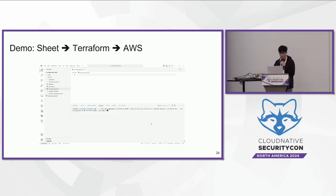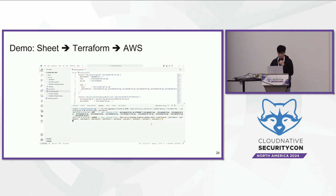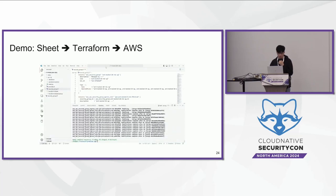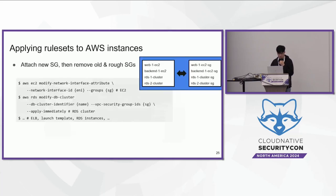Let's move on to the demo showcasing the process from the spreadsheet to Terraform and then to AWS. The ruleset is populated from the spreadsheet, the plan is run, and the actual security group is added to AWS. After creating the rulesets, we attach the new security groups and remove the old ones by generating a list of AWS CLI commands. Different commands are executed for EC2, RDS, and ELB instances, ensuring security groups are correctly attached to each resource type.